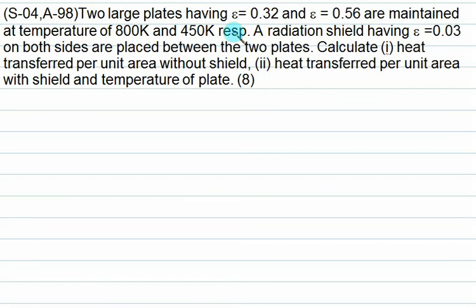We have given here two large plates having epsilon equals to 0.32 and 0.56 are maintained at temperature of 800 and 450. A radiation shield having epsilon equal to 0.03 on both sides are placed between the two plates. We are going to calculate the heat transfer per unit area without shield and heat transfer per unit area with shield and the temperature of the shield.